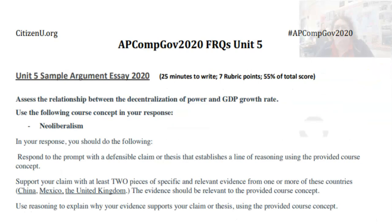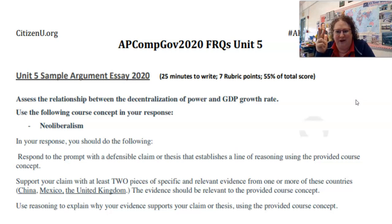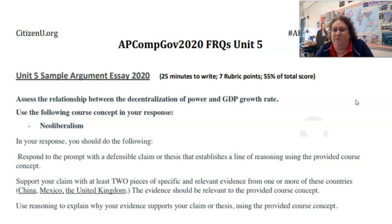Mr. Kineen has provided some fantastic questions. We're going to look at a sample argumentative essay from Unit 5. We use an acronym in my class — HISSR PSR: you have a prompt, restate the prompt, pick a side, and provide your reasoning. This helps us write our thesis. Assess the relationship between the decentralization of power and GDP growth rate, using the course concept of neoliberalism. You should respond with a defensible claim or thesis, and support your claim with at least two specific and relevant pieces of evidence from China, Mexico, and the UK.